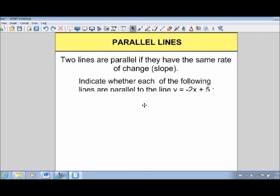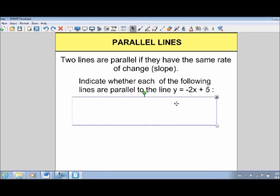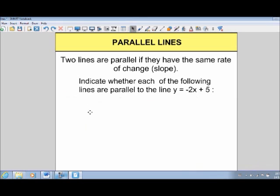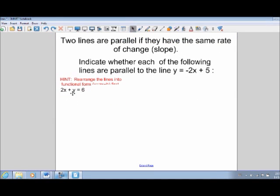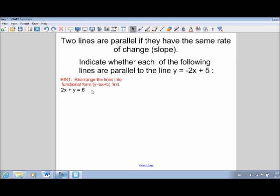So again, same thing. Indicate this time which lines are parallel to negative two x plus five. And all right. So here we have two x plus y equals six. Now I gave a bit of a hint here. Before you can start this one, you'll need to rearrange this equation so it's in functional form, or y equals ax plus b. And we'll notice why in a second.